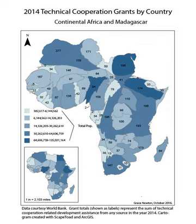In addition, remittances received from migrants working or living in diaspora form a significant amount of international transfer. Some governments also include military assistance in the notion of foreign aid, although many NGOs tend to disapprove of this. Official development assistance is a measure of government-contributed aid, compiled by the Development Assistance Committee of the OECD since 1969. The DAC consists of 34 of the largest aid-donating countries.